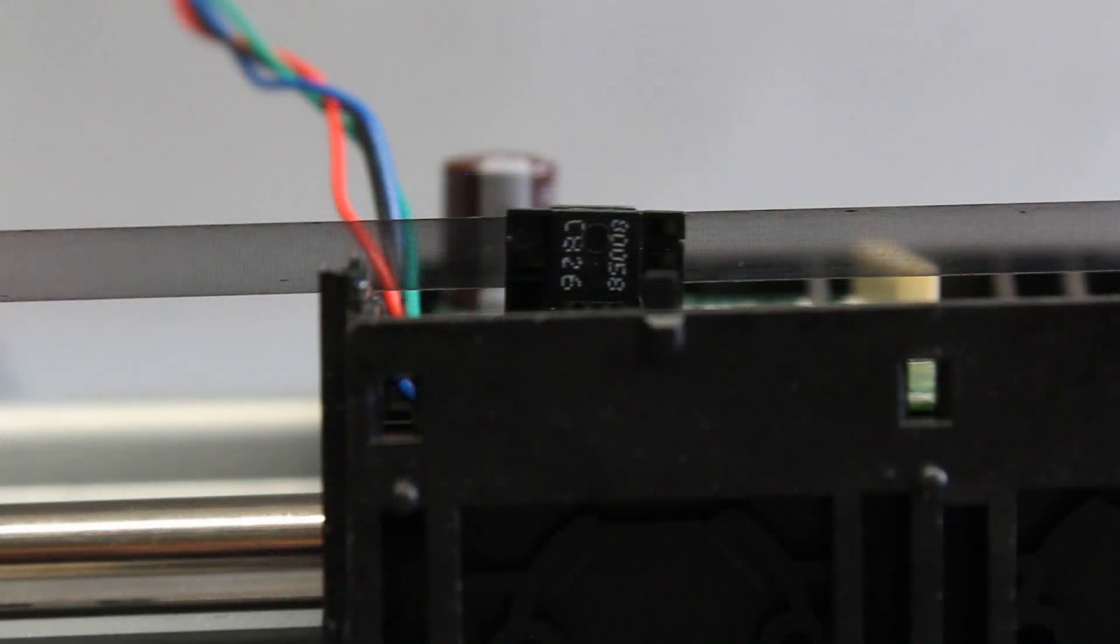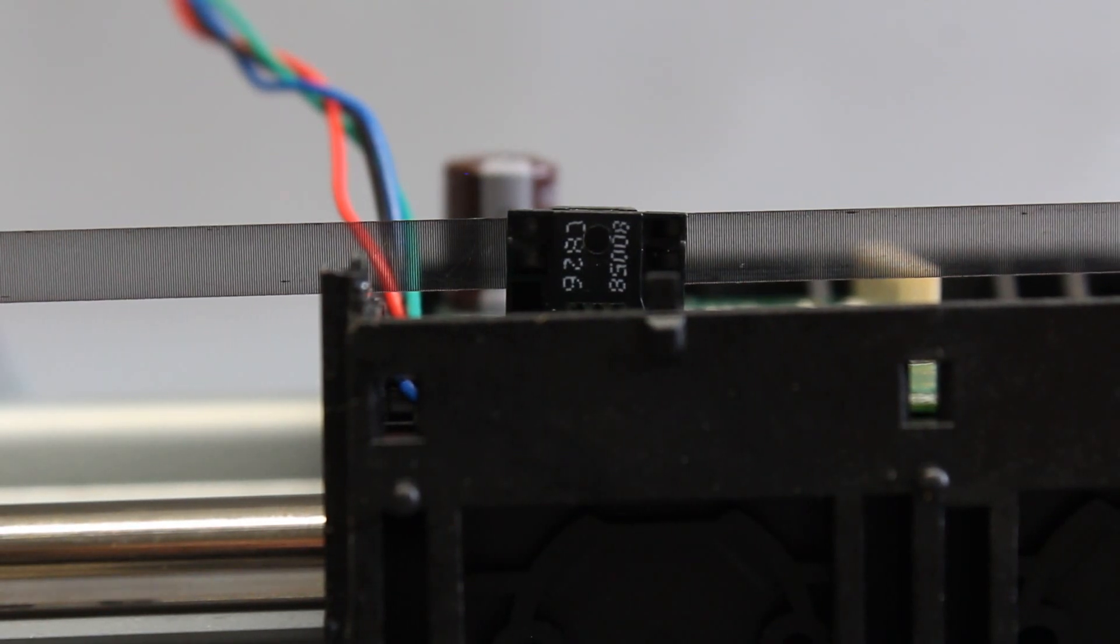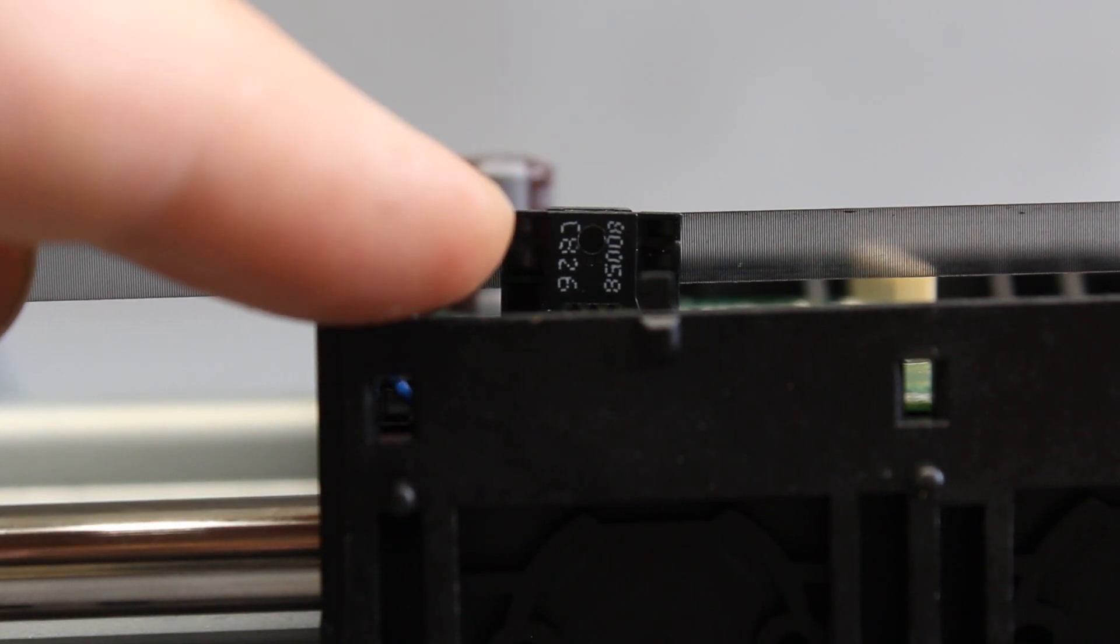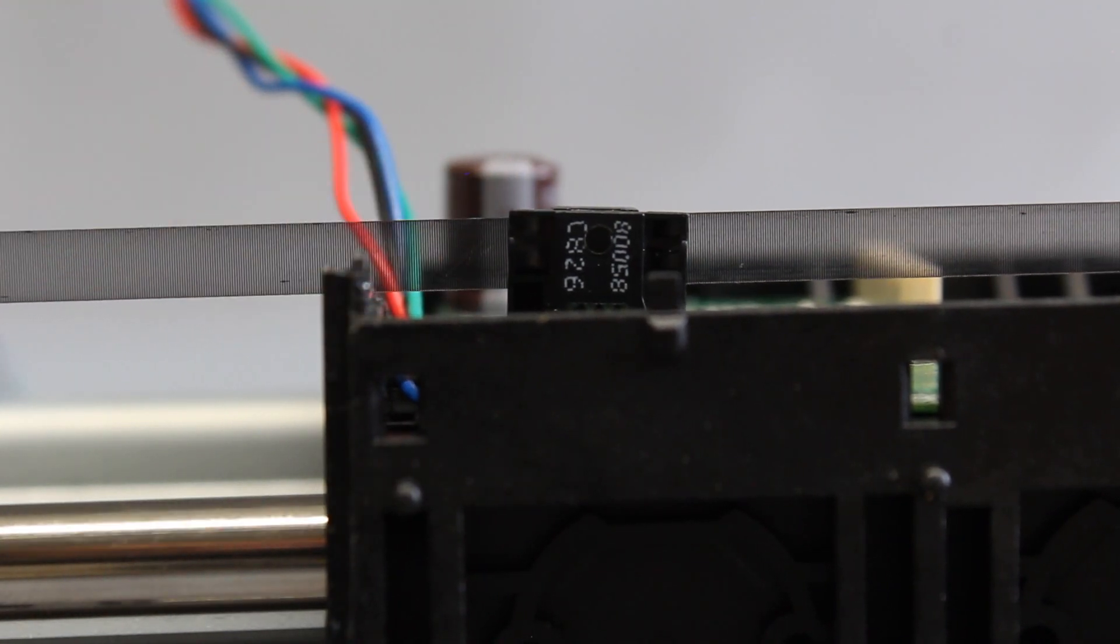When deflecting the carriage manually, the microcontroller compensates the movement of the printhead caused by the side load. In doing so, backlash or slip are partially balanced by the control loop.